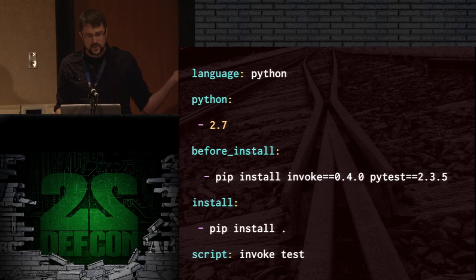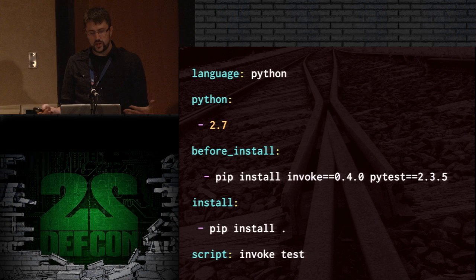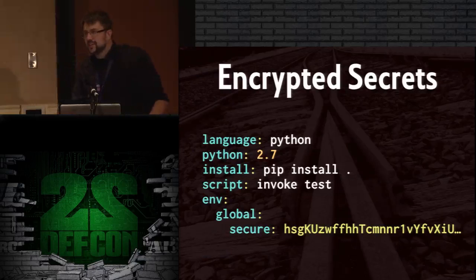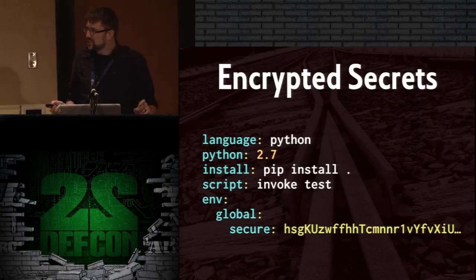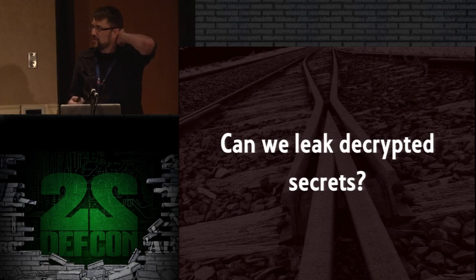This is the definition for a Travis YAML. You set your language — here we're doing Python 2.7 — with before_install steps, installation, and a script to run. They have this neat thing called encrypted secrets where you put the secret out in the open in encrypted form. All this does is set up an environment variable that can be used later. So can we leak those decrypted secrets? Where do they come out?